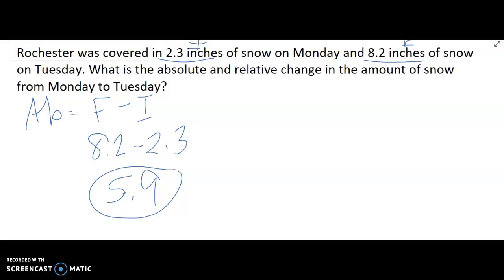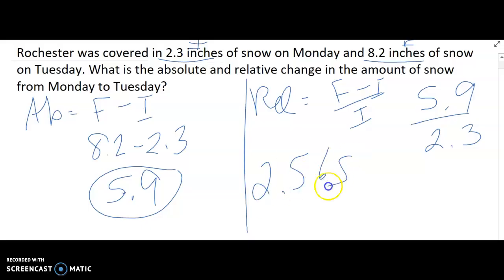It's positive. That means it's an increase. So from Monday to Tuesday, we had a 5.9 inches of snow increase. If we're talking relative change, we know that relative change is final minus initial all over the initial. Well, we know the numerator is 5.9. We've already talked about that. Now the initial, what did we start with? We started with 2.3. When I divide those, I get 2.565, which as a percent is 256.5%. 2.3 to 8.2, way more than doubled. That's why it's such a huge percent. So from Monday to Tuesday, there was a 256.5% increase in snow in Rochester.